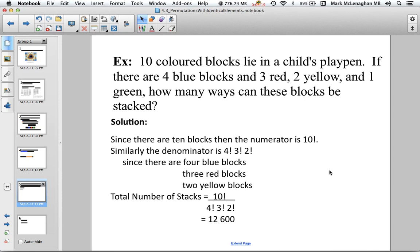Since there's four blue blocks, three red blocks, and two yellow blocks. So the total number of stacks equals ten factorial divided by four factorial times three factorial times two factorial, which is 12,600 stacks, ways that we can stack the ten blocks.